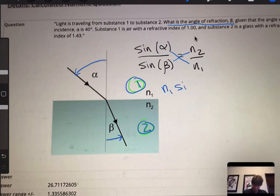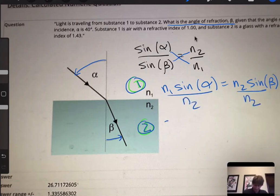I'm going to cross multiply, so that's going to be n1 sine alpha equals n2 sine beta. Then I'm going to divide both sides by n2, so I get sine beta equals...